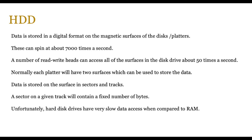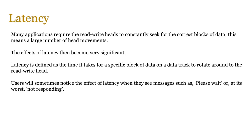These platters can spin at around 7,000 times a second, and the number of read and write heads can access all of the surfaces of the disk about 50 times a second — so these read and write heads are moving very, very quickly. Each platter will normally have two surfaces which can be used to store data, top and bottom. Data is stored on the surface in sectors and tracks, and a sector on a given track will contain a fixed number of bytes. Unfortunately, hard disk drives have very slow data access compared to RAM.